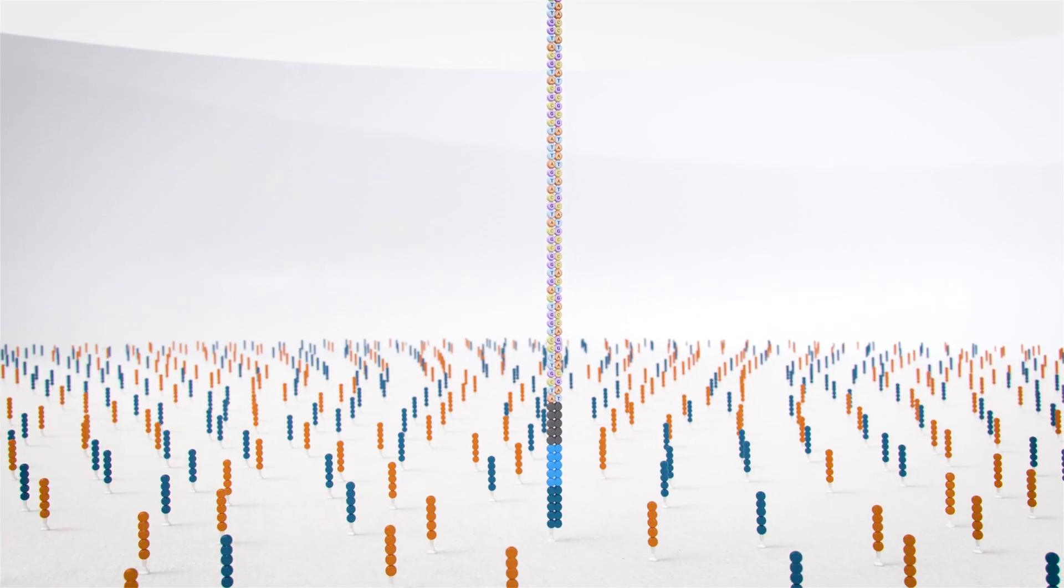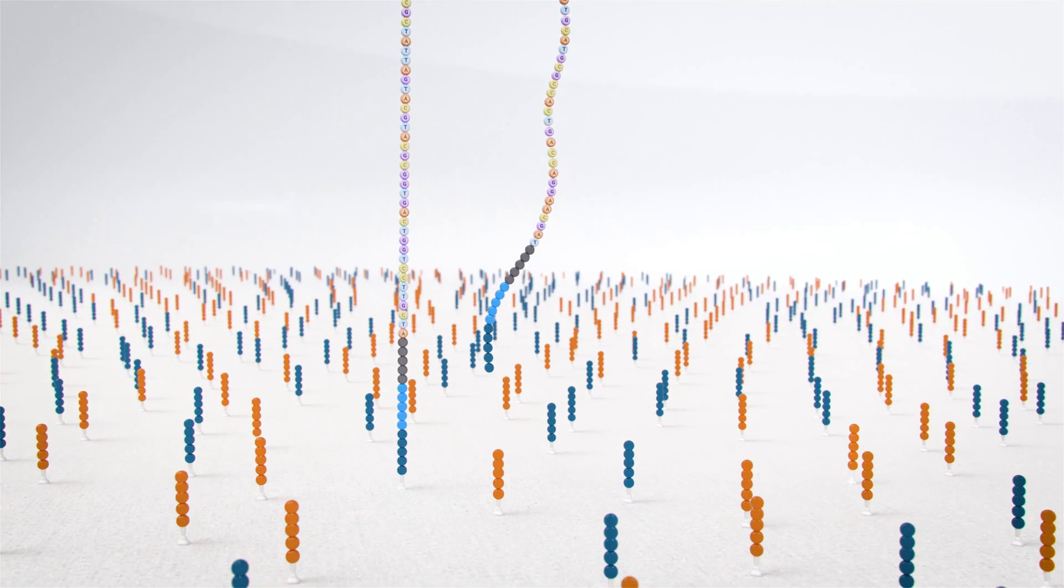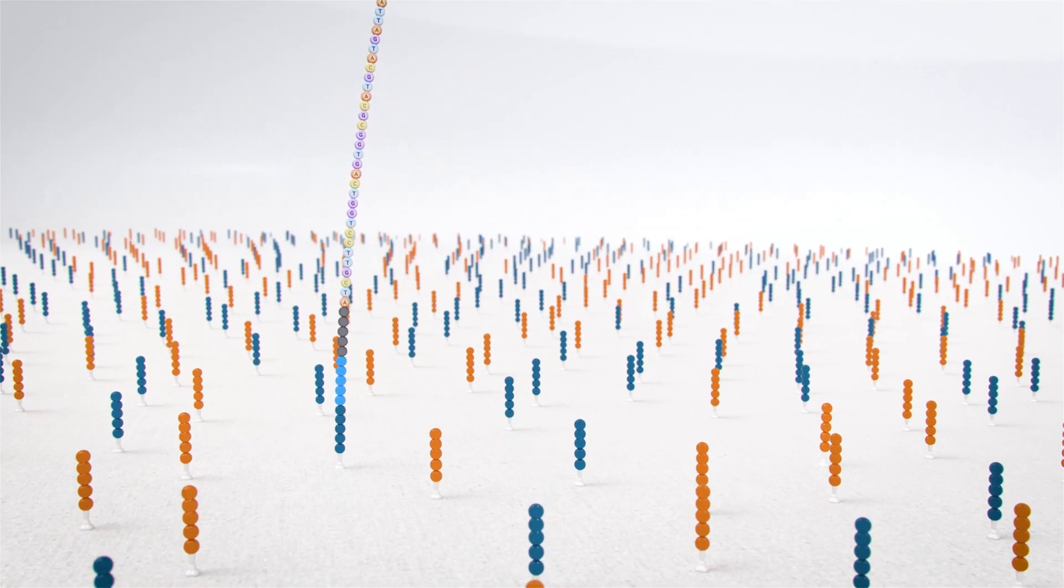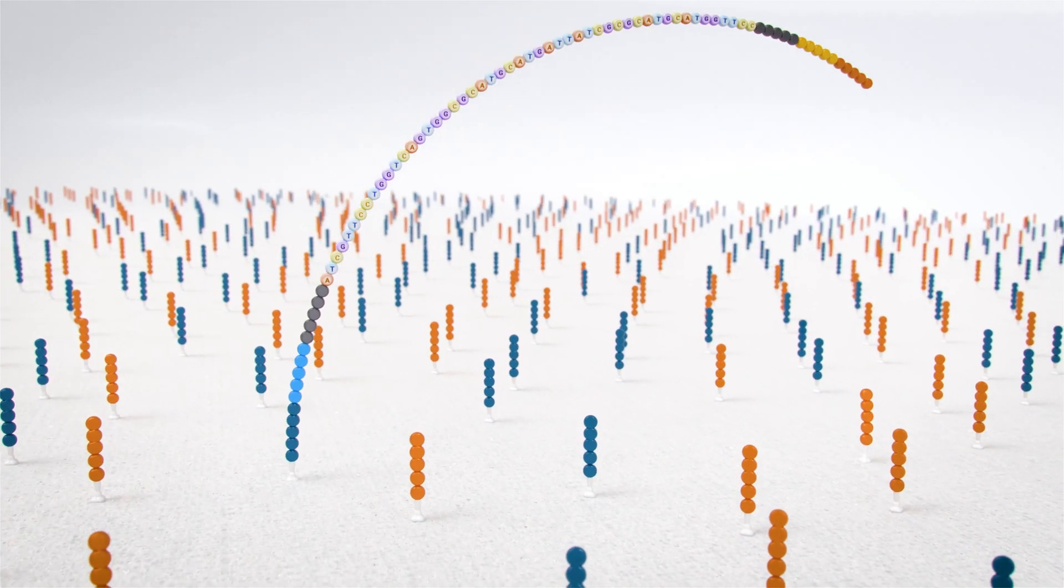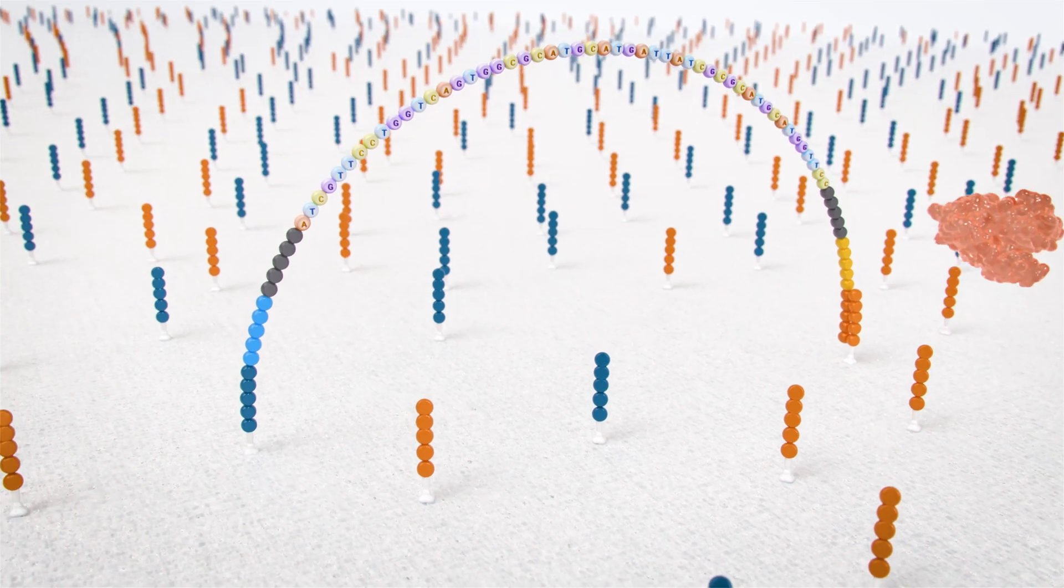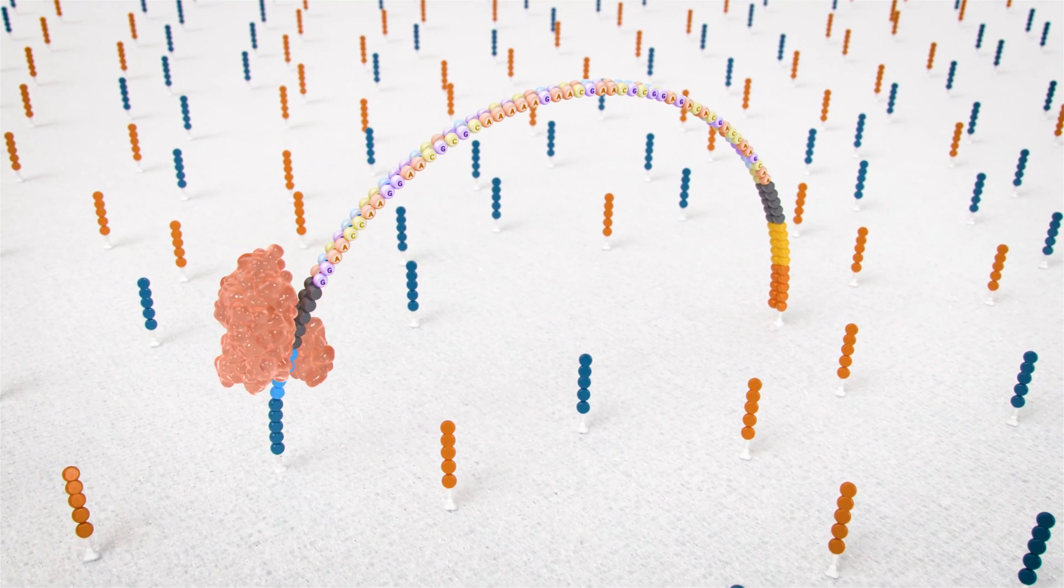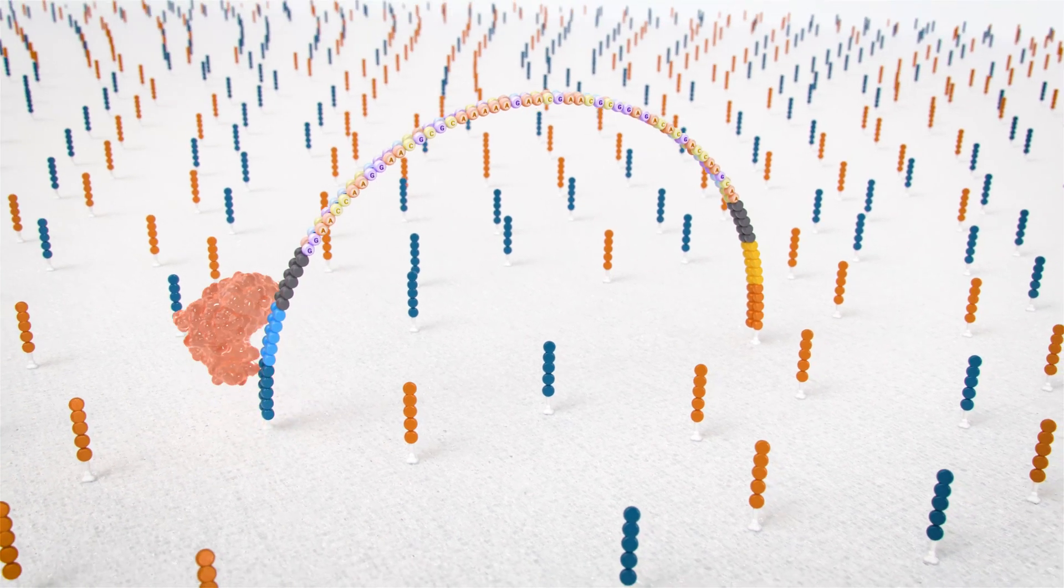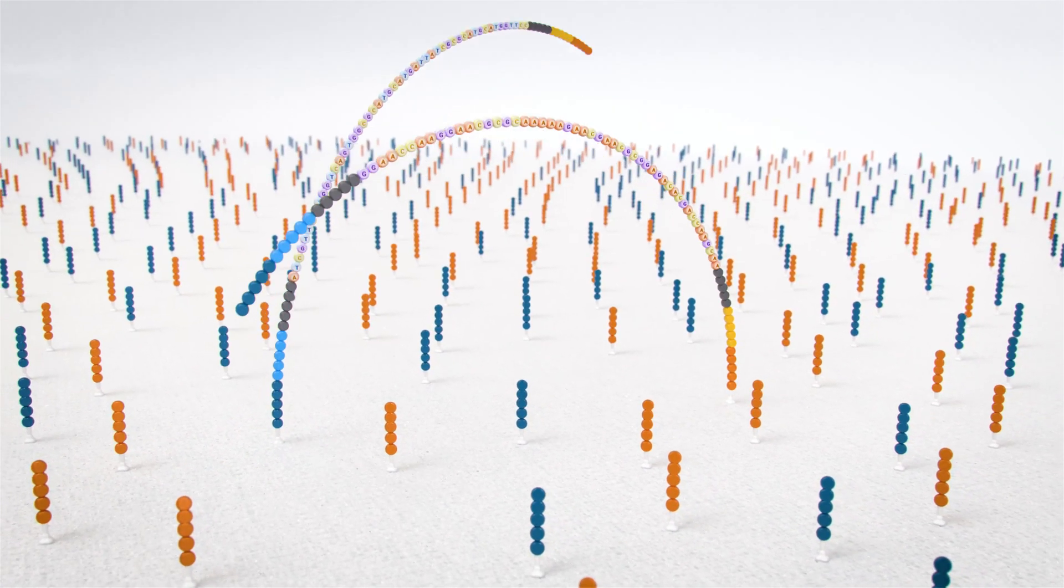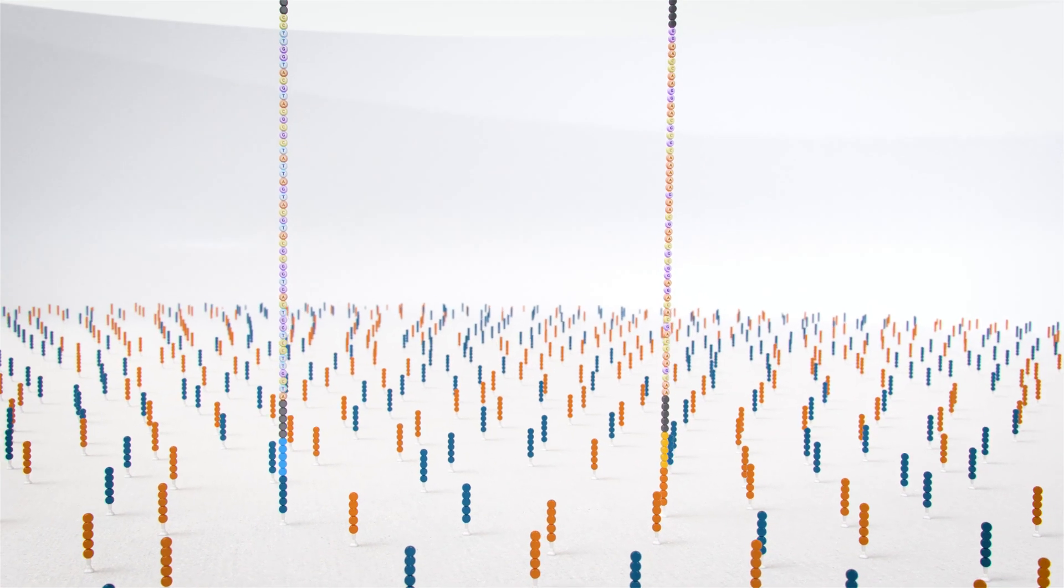After libraries are attached to the flow cell, the strands are clonally amplified through a novel amplification chemistry called exclusion amplification or XAMP. After the polymerase creates a copy of the hybridized template molecule, another copy is made by hybridizing to the second type of oligo on the surface, creating two identical copies tethered to the surface. The process is repeated many times per cluster, resulting in clonal amplification of all the library fragments.